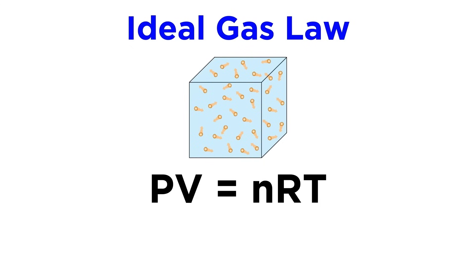The ideal gas law will include all of the variables we have been discussing so far, and is defined by the equation PV equals nRT, where pressure, volume, moles, and temperature are all listed.